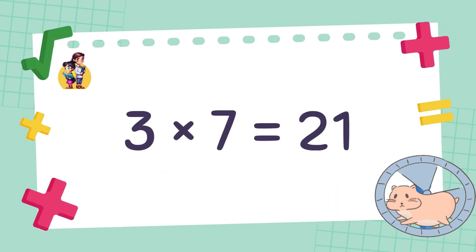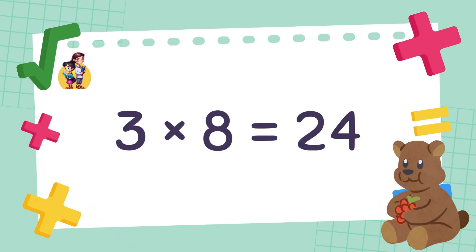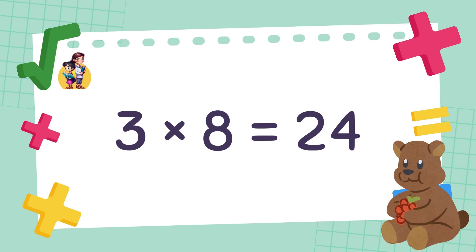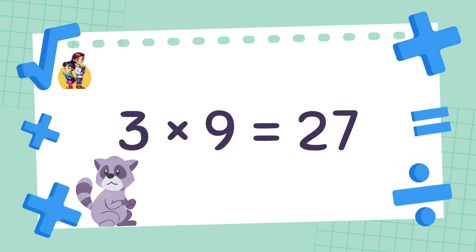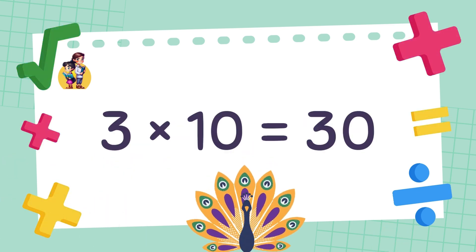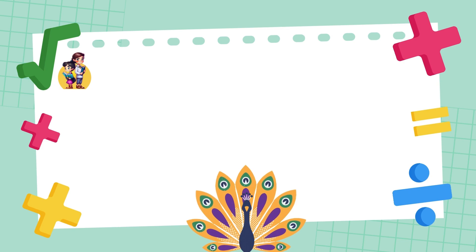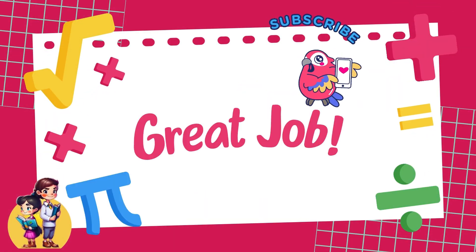3 times 7 is equal to 21. 3 times 8 is equal to 24. 3 times 9 is equal to 27. 3 times 10 is equal to 30. Great job!